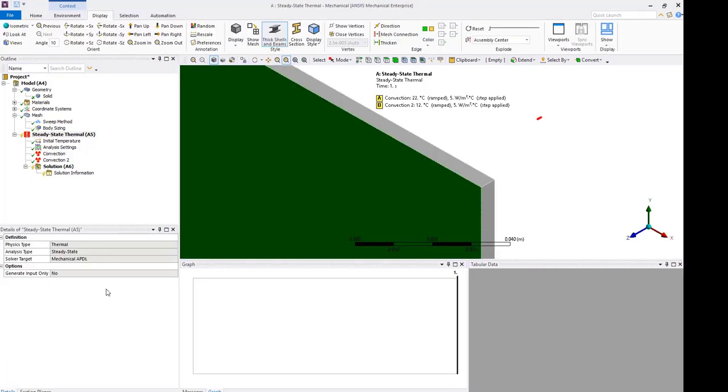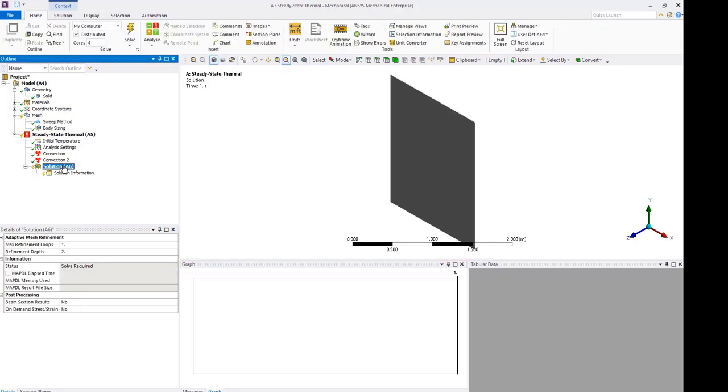The perimeter of the glass doesn't have any boundary condition applied, so an adiabatic condition is assumed by default. Solve the model.